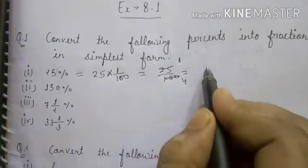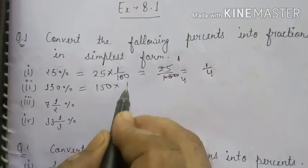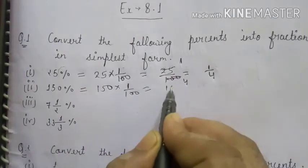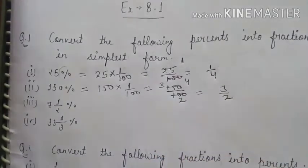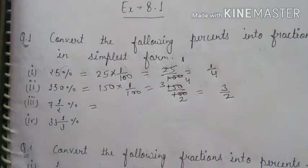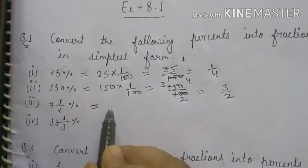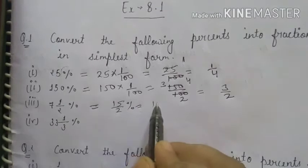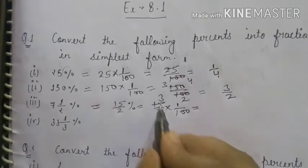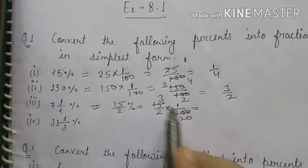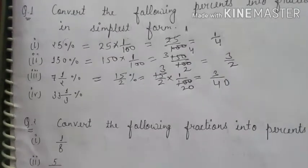Next, 150%: it can be written as 150 upon 100. Cancelling by 50 gives 3 upon 2. Next, 7½%: convert to improper fraction — 2×7+1 = 15 upon 2 percent. Removing percent, multiply by 1 upon 100: cancel 5 from 15 and 100, giving 3 upon 2×20 = 3 upon 40.